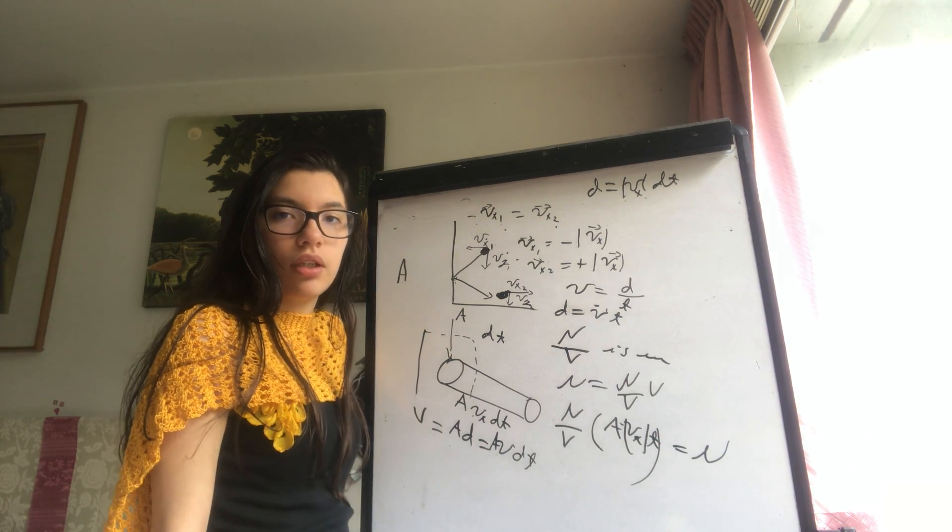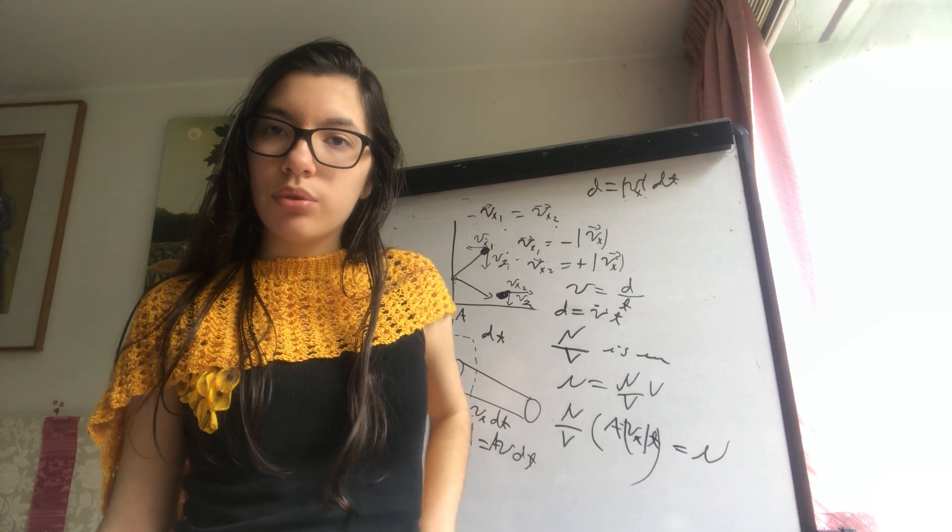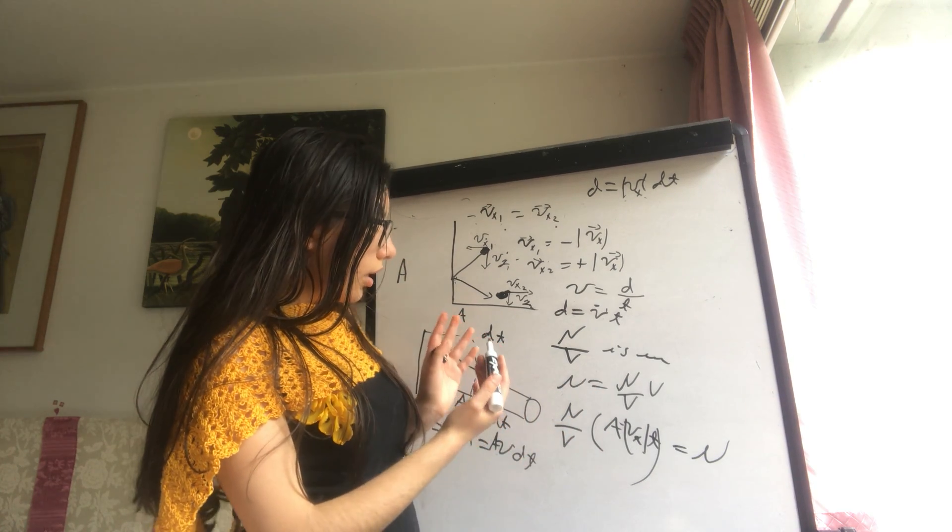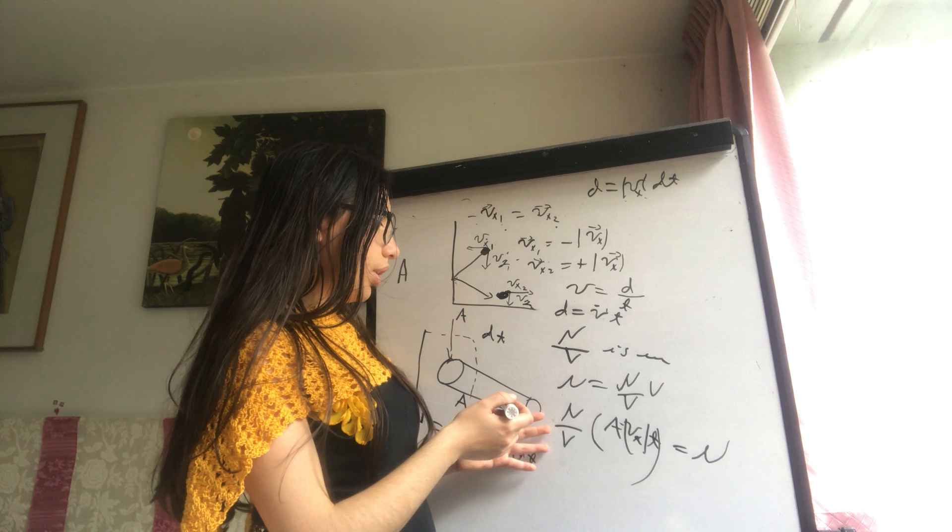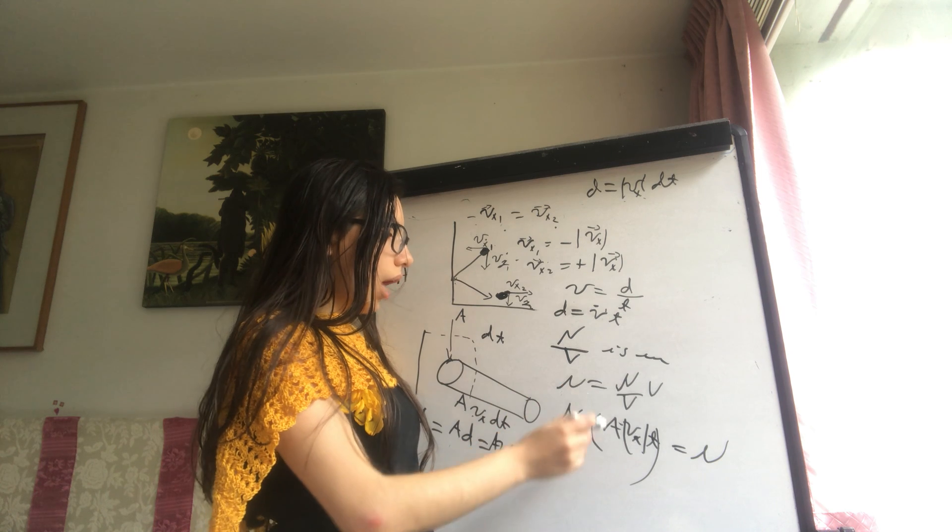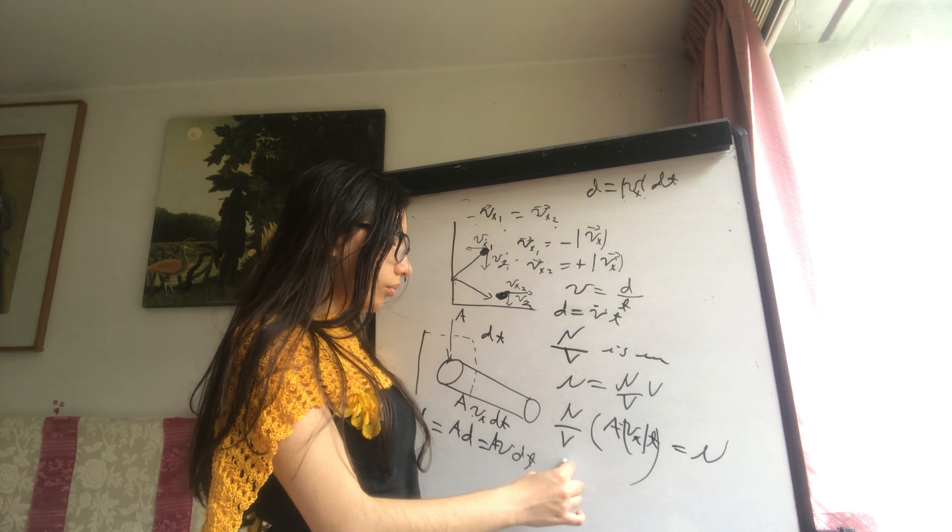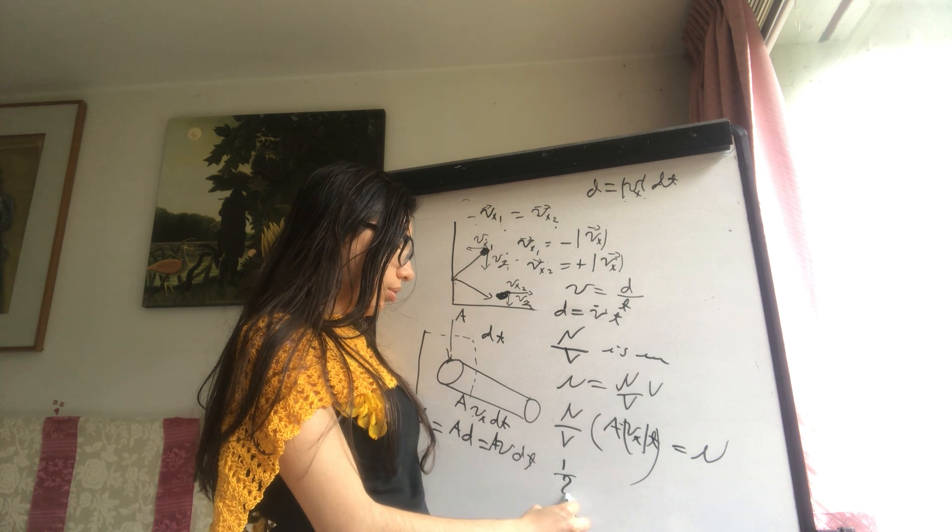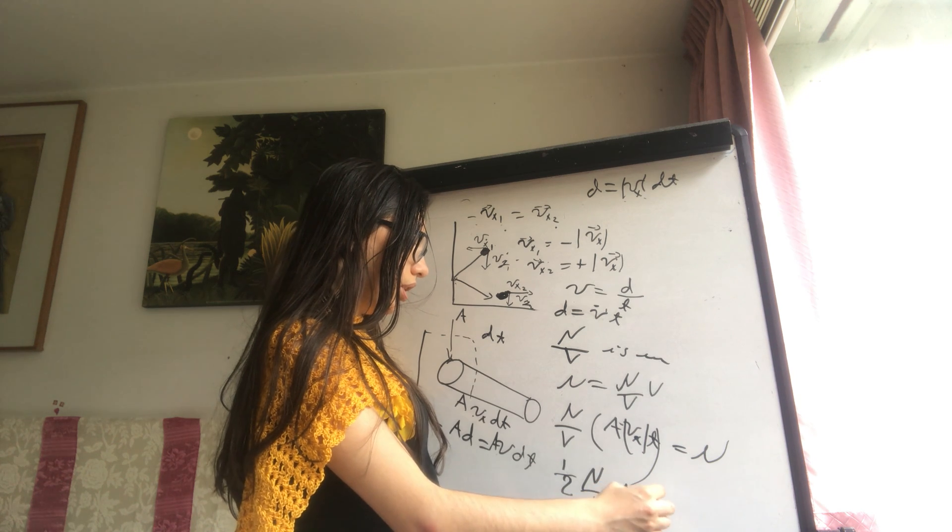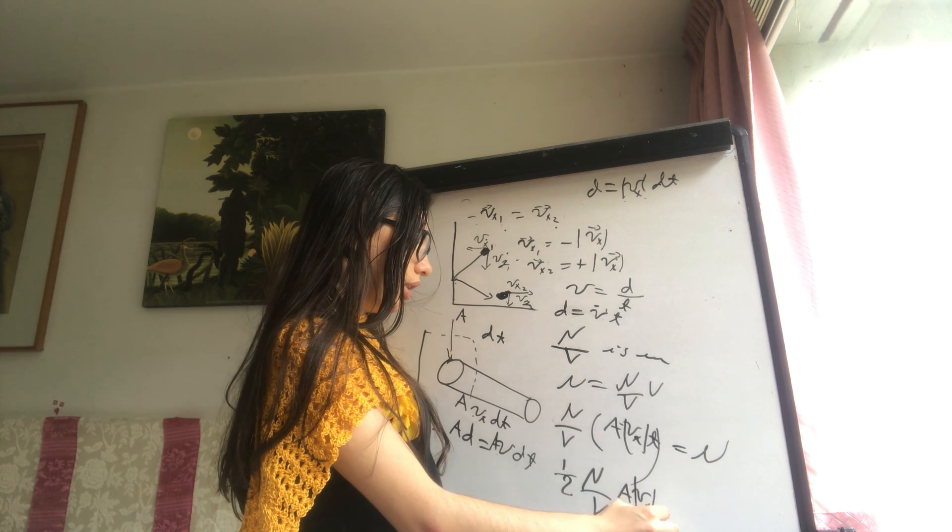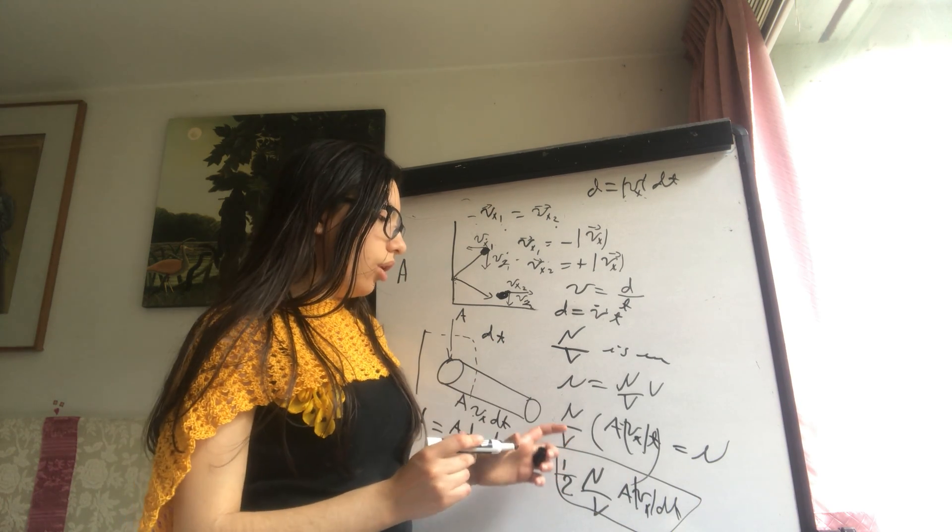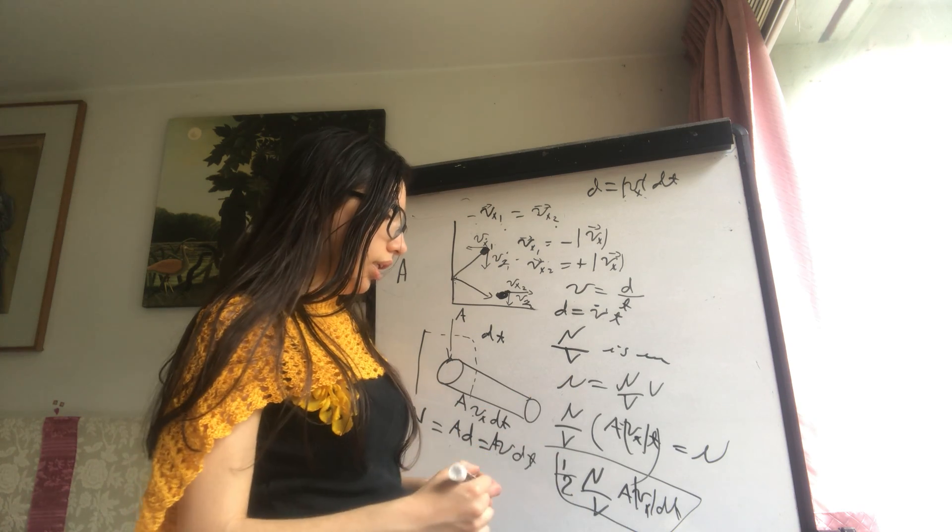This is the number of molecules in the cylinder. Now, how many molecules will collide in this time interval? Around half of the molecules are going towards the wall, and half are going away. So half of the molecules will be colliding: one half of N over V times A times the velocity times dt. This is the number of collisions that will occur in the dt interval.